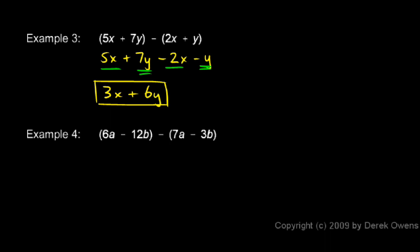In example 4, there are a lot of negative signs. We have 6a minus 12b minus 7a minus 3b. We want to try to rewrite this without the parentheses. We have this thing minus that. So let's start by writing this first thing: 6a minus 12b.